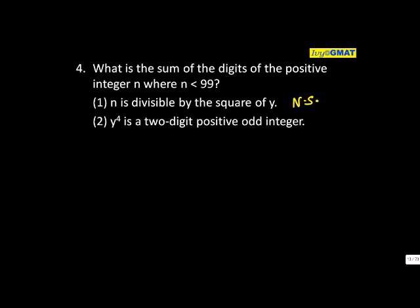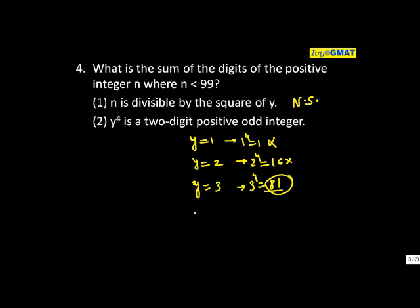What is the value of y? Let's start with 1. 1 to the power 4 would be 1—it's odd but not two-digit, so not possible. y equals 2: 2 to the power 4 is 16, which is not odd, so also not fine. y equals 3: 3 to the power 4 is 81—odd and two-digit, so this is one possibility.